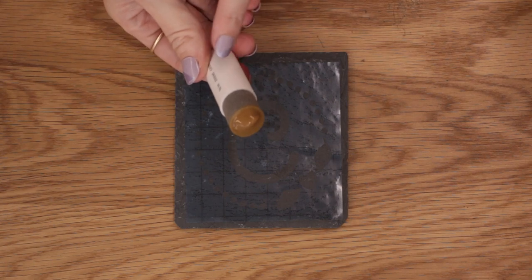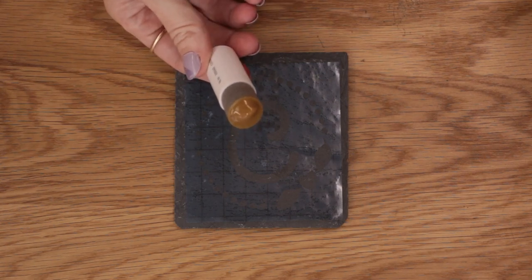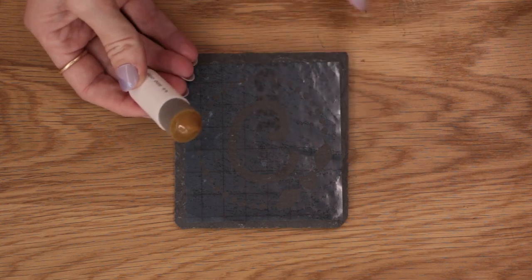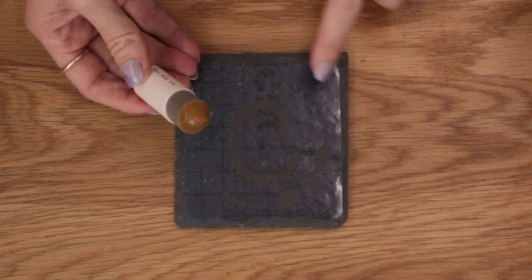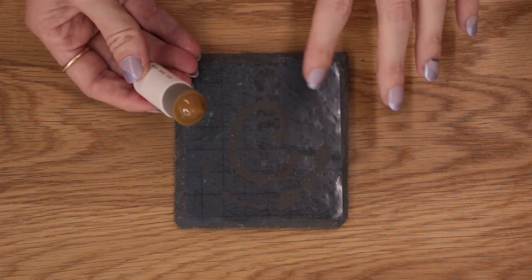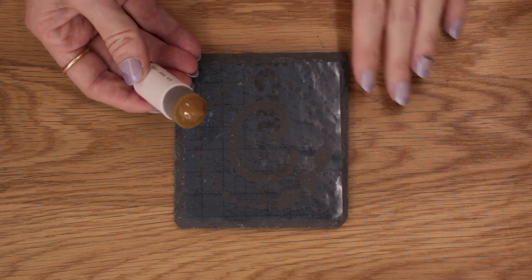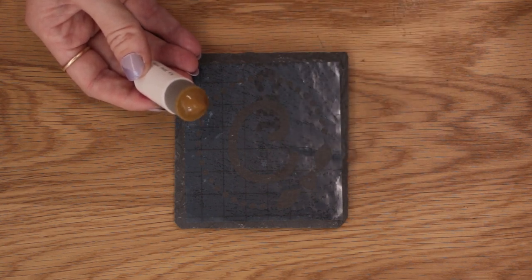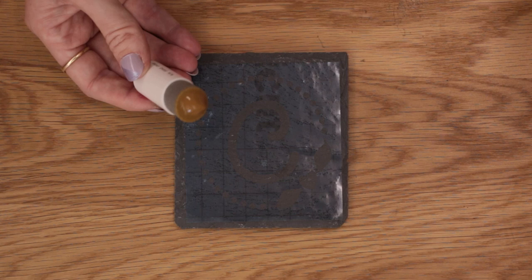So I've dabbed my pouncer into my Etchall and then I'm going to come in and add it to my slate stencil. You want to try and be as even with this as possible but if you don't do it on the first layer you can smooth it out.